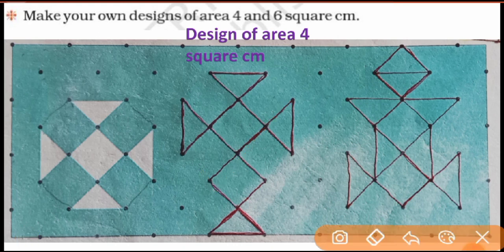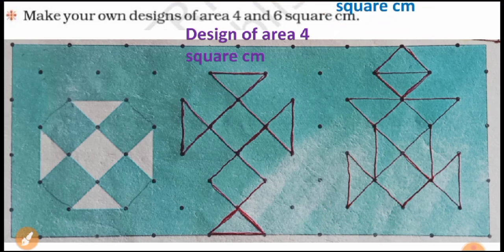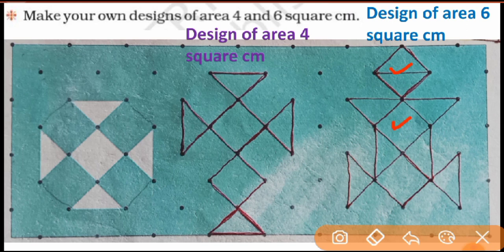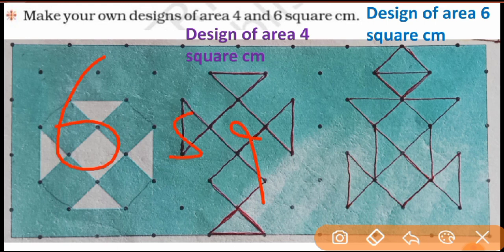This design is for area 6 square centimeters. Three complete squares: 1, 2, and 3. Then these two halves make 4, these two halves make 5, and these two halves make 6. Total 6 squares, so area = 6 square centimeters.